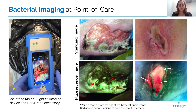To perform fluorescence imaging, clinicians need to turn off the room lights or attach the Moleculite dark drape for a portable dark environment. The device's precise and safe violet light is turned on and regions of high bacterial load immediately appear as red or a blue-green cyan on the digital touch screen.